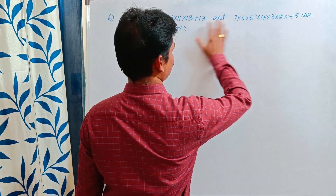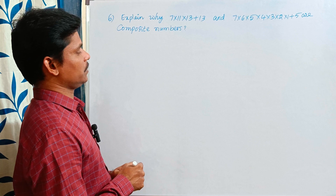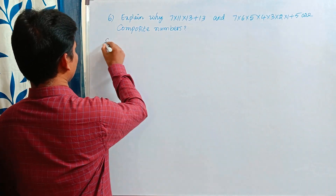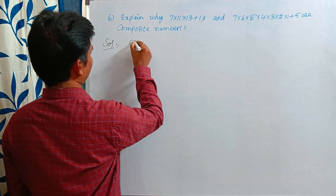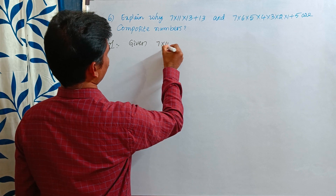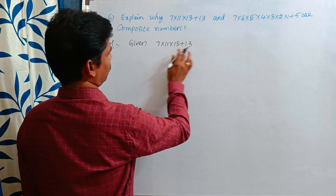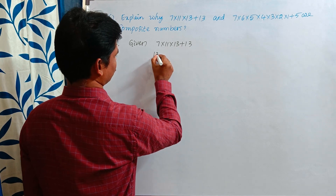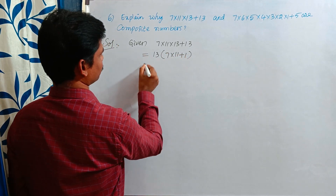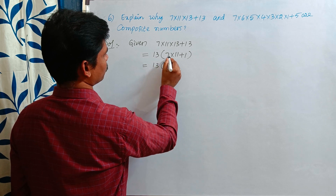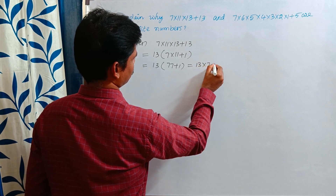So here the given two numbers are composite numbers — why they are asking. See here, first take this number: 7 × 11 × 13 + 13. Here 13 is common. So take out 13: 13 × (7 × 11 + 1) = 13 × (77 + 1) = 13 × 78.